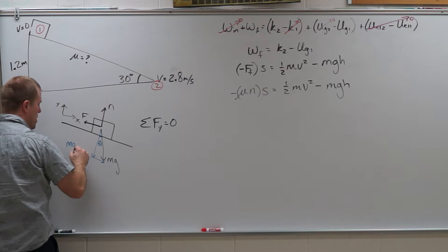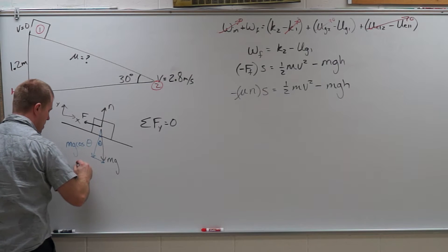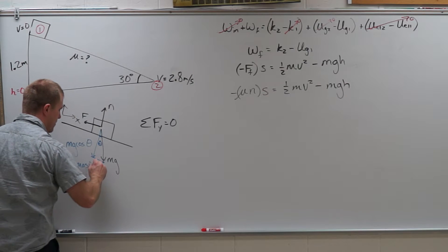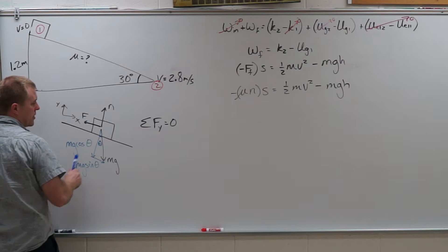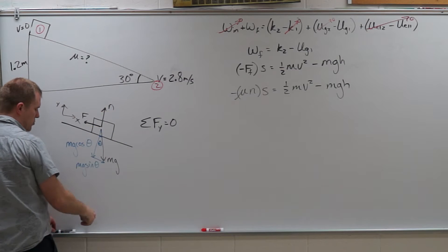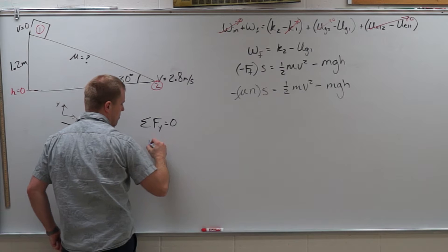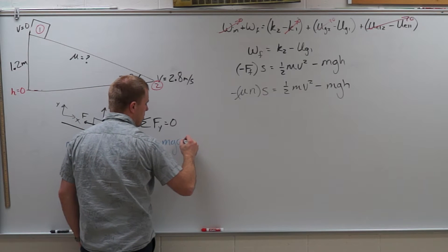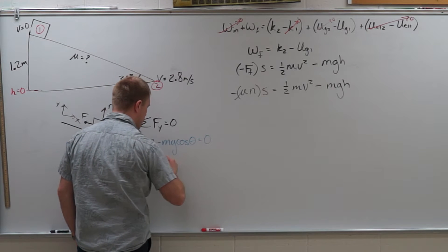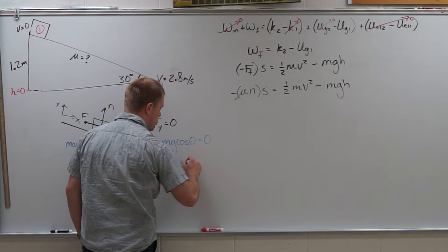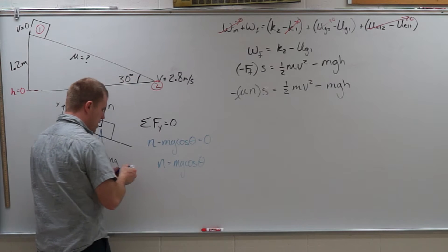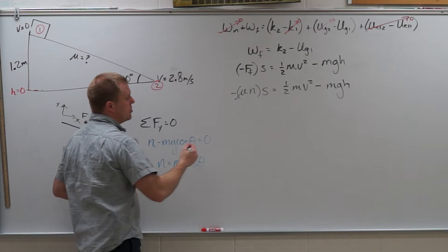And so I have mg cosine of theta here, mg sine of theta here. So in my y direction I do have normal force minus mg cosine of theta. So I have normal force minus mg cosine of theta equals zero. So the normal force is equal to mg cosine of theta. So now I can make that substitution over here.